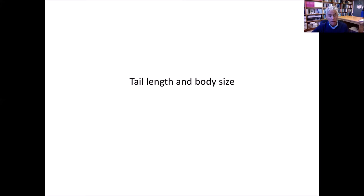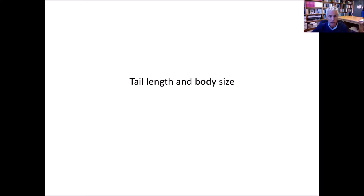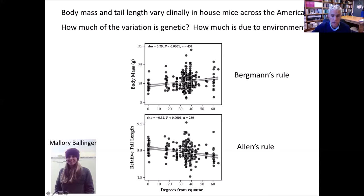I'm going to focus on two studies: first on tail length and body size, and second on water consumption. If we download data from museum collections on body mass as a function of latitude for adult males where locality information is well-curated, we see a correlation between body mass and latitude in both the northern and southern hemispheres. There's also a negative correlation between relative tail length and latitude — as you get further from the equator, tails get shorter. But there's a lot of scatter — substantial variation at individual latitudes — and we'd like to know how much is genetic and how much is due to the environment.